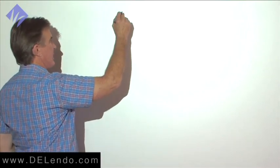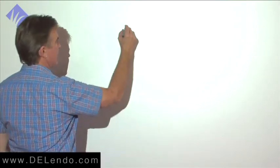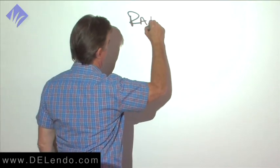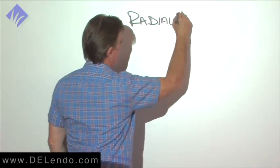So we're going to use nickel-titanium K-files as radial feeler gauges.